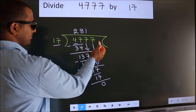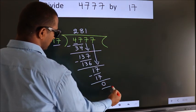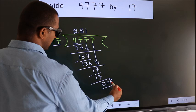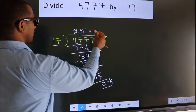No more numbers to bring down. So we stop here. This is our remainder. This is our quotient.